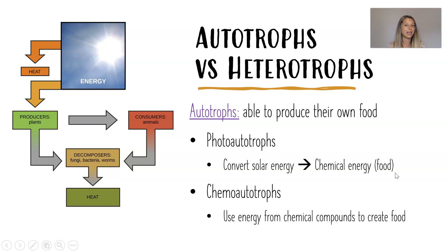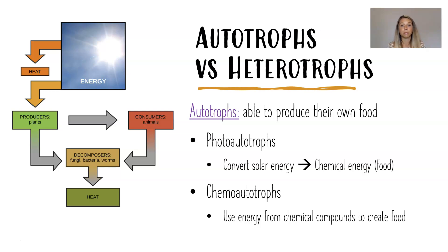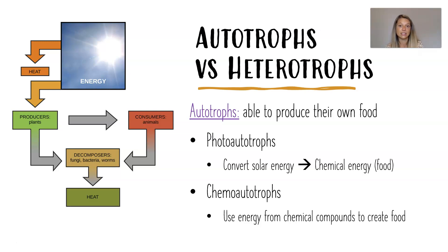Autotrophic organisms are organisms that don't have to consume other organisms for food — they are capable of producing their own food. The word part 'troph' means food, so autotrophs produce their food sort of automatically. The autotrophic organisms you're probably most familiar with are the photoautotrophs. These are autotrophic organisms that photosynthesize — they convert solar energy into chemical energy through the process of photosynthesis. Chemoautotrophs are autotrophic organisms that make their own food using the energy found in chemical compounds, like the microorganisms found in sulfur vents at the bottom of the ocean.